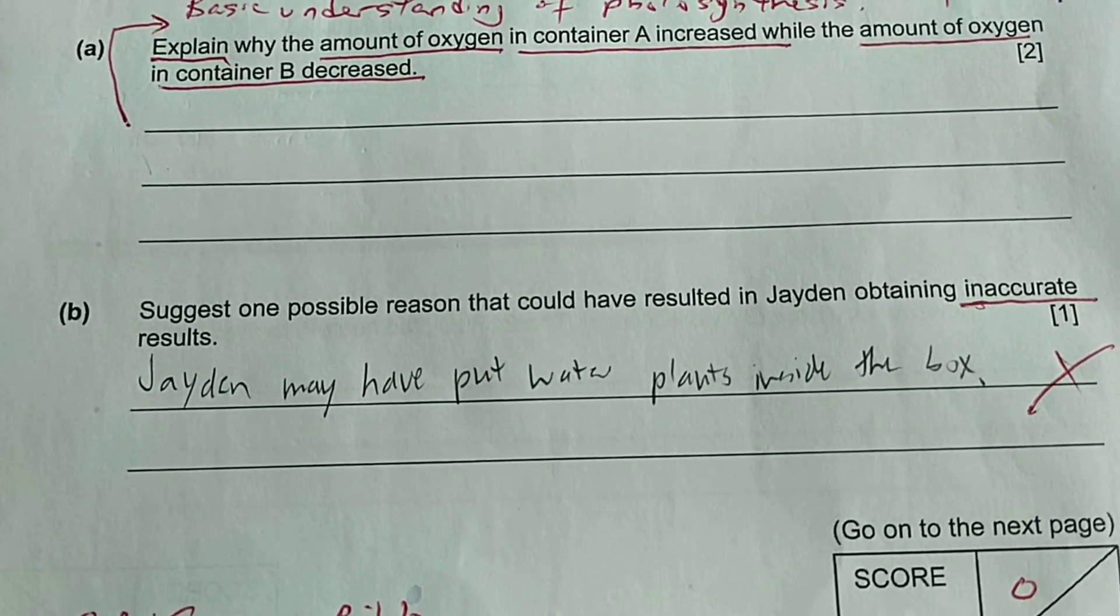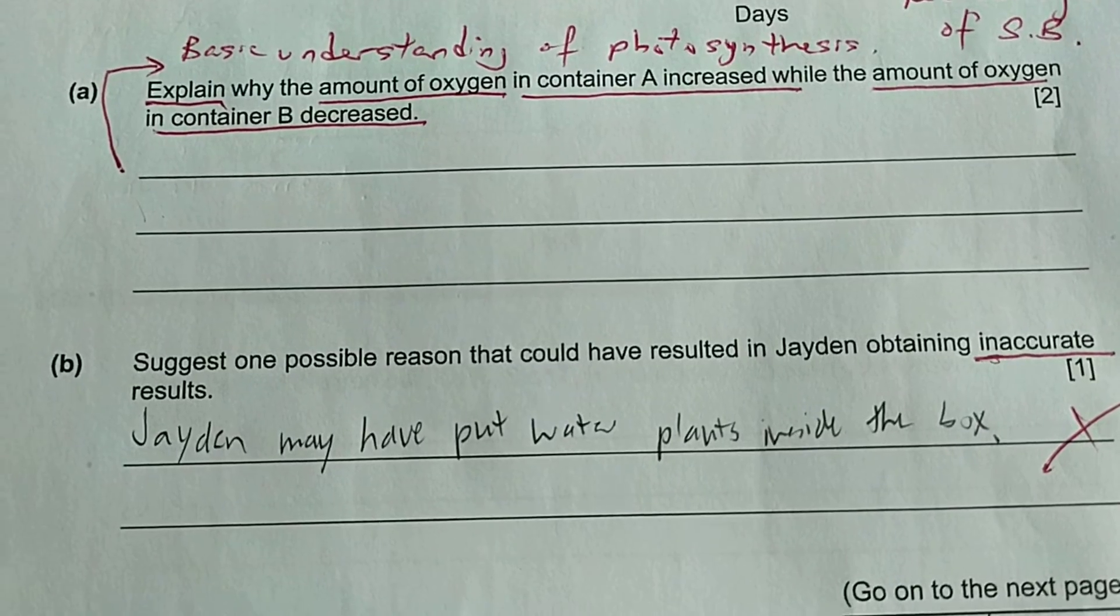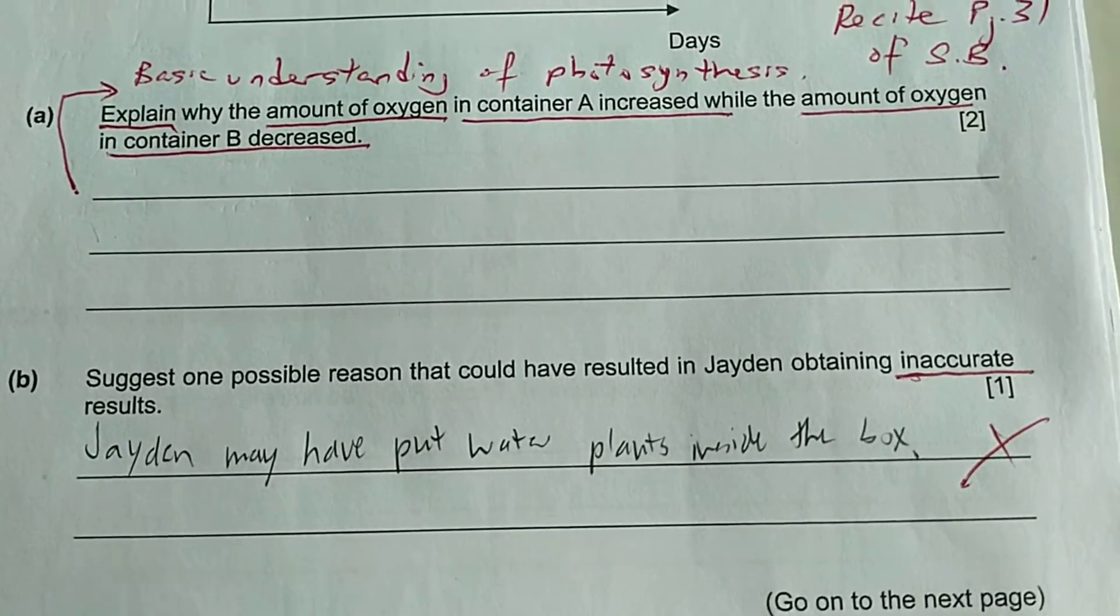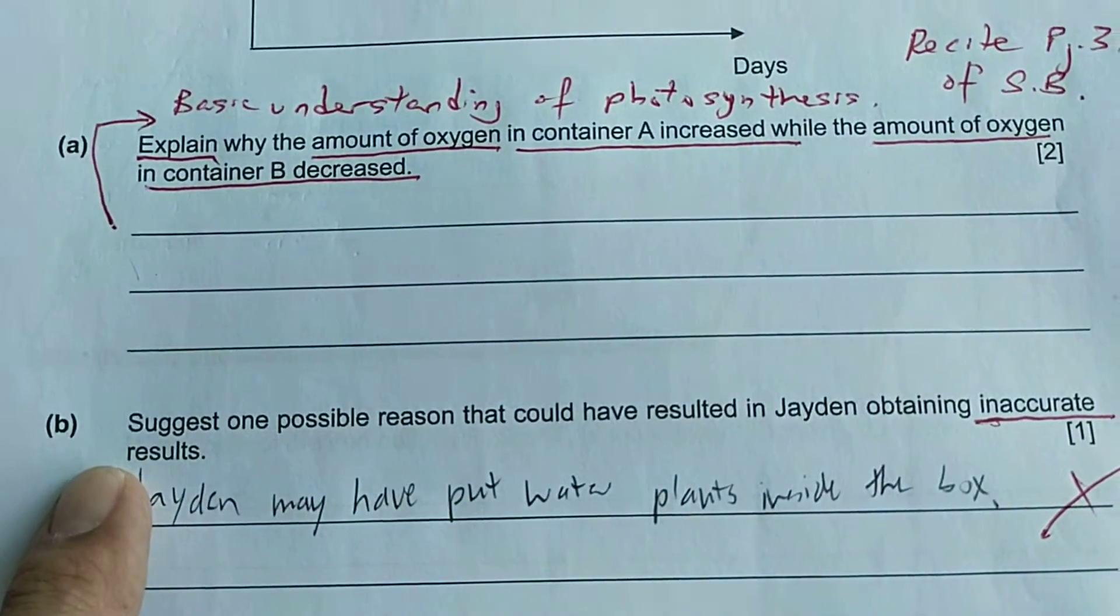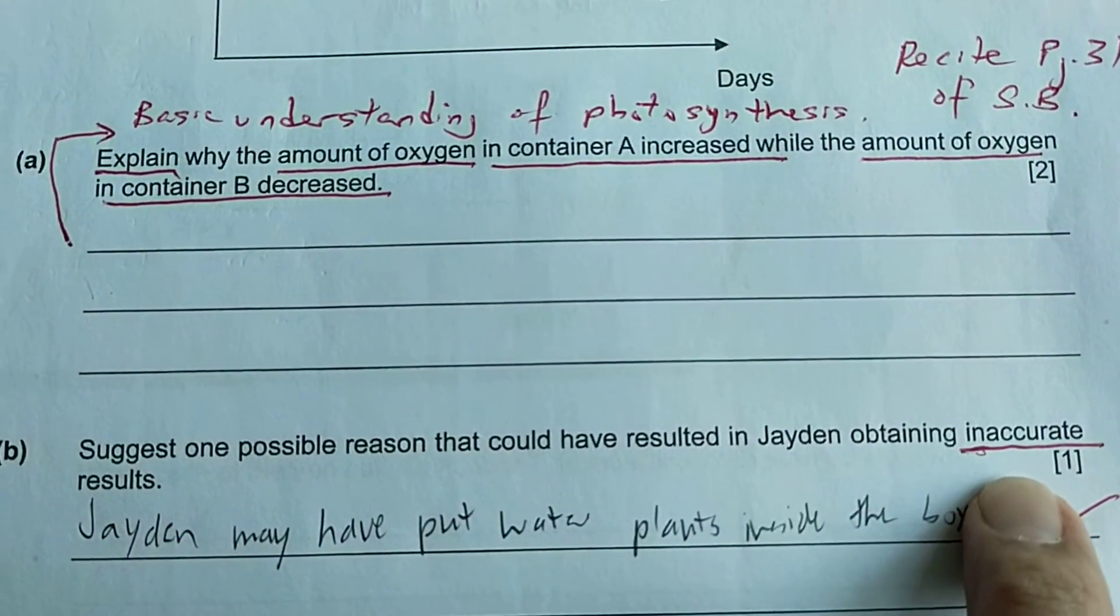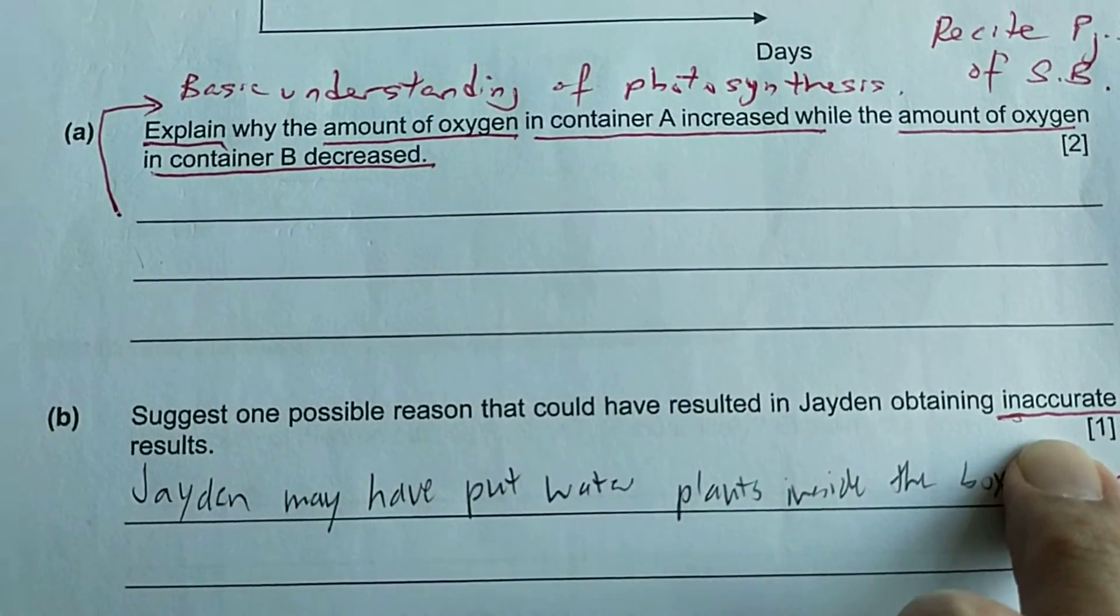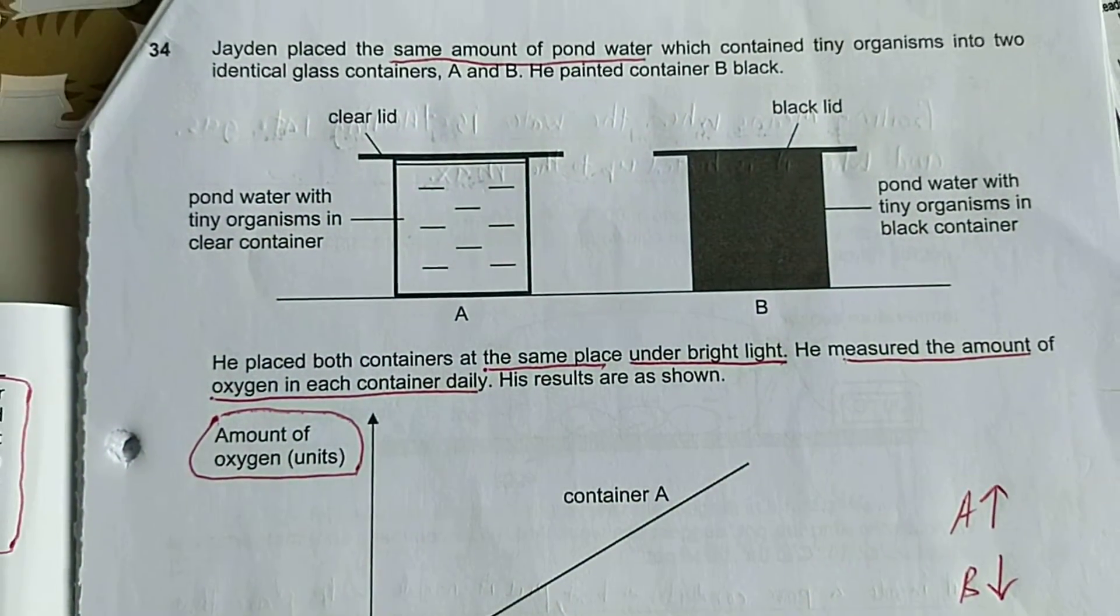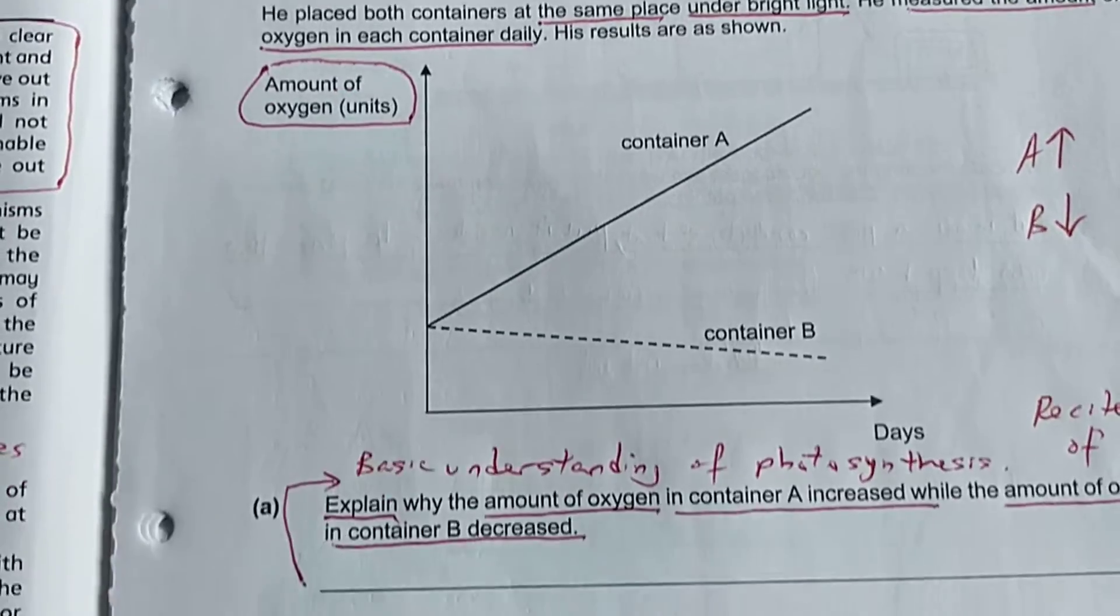Here in part B, suggest one possible reason that could have resulted in Jaden obtaining inaccurate results. I underline this part: inaccurate result. So the student's got to think, why is it inaccurate? Maybe the experiment is not fair. The student needs to generate possibility.